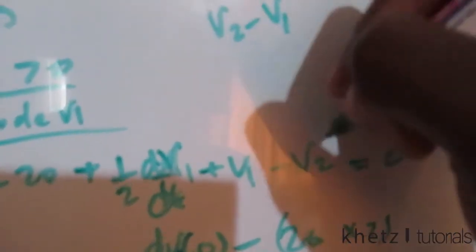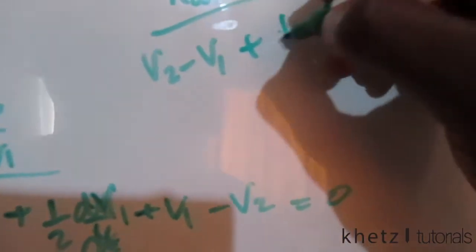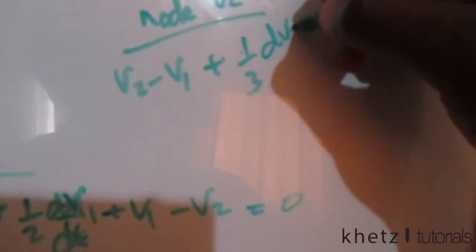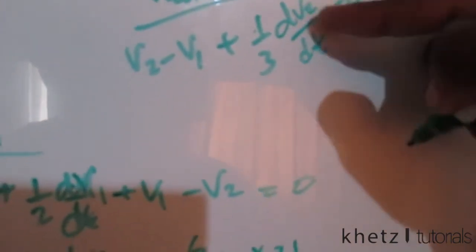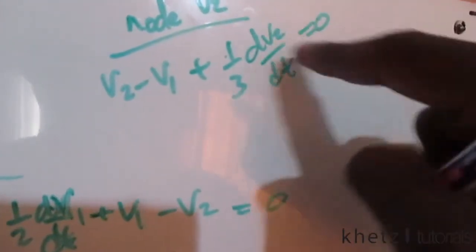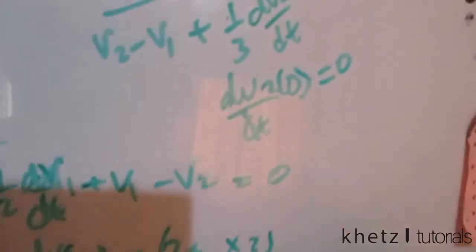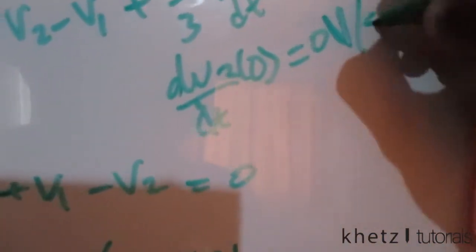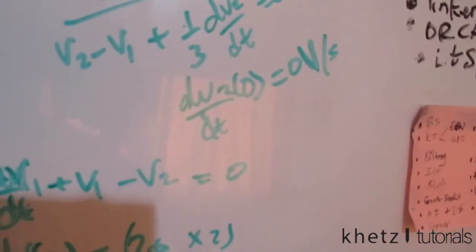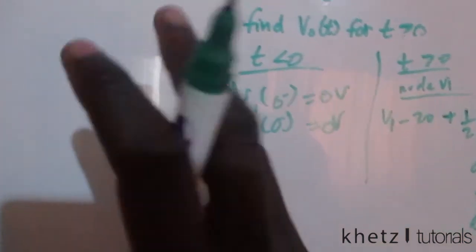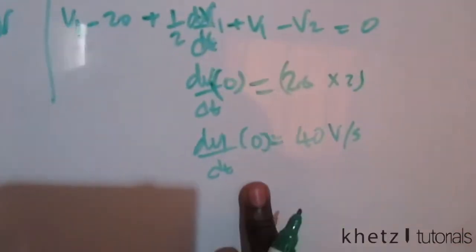Moving on to node v2, we have (v2 − v1)/1 plus (1/3)(dv2/dt) = 0. At t = 0, both v1 and v2 are zero, so the voltage terms vanish, leaving (1/3)(dv2/dt) = 0. Therefore dv2/dt at t = 0 equals zero volts per second. We now have our two initial conditions and their derivatives.